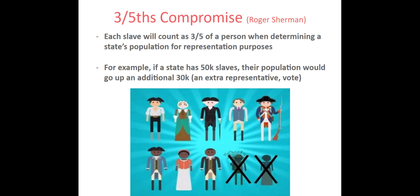The compromise came from Roger Sherman, who recommended what became known as the Three-Fifths Compromise. Each enslaved person would count as three-fifths of a person when determining a state's population for representation purposes. Looking at the graphic below, five free individuals in the top row would all count toward the population, while in the bottom row of five enslaved individuals, two are crossed out — meaning for every five enslaved people, three would be counted. So if a state had 50,000 slaves, their population count would be bumped an additional 30,000, essentially earning an extra representative in the House.